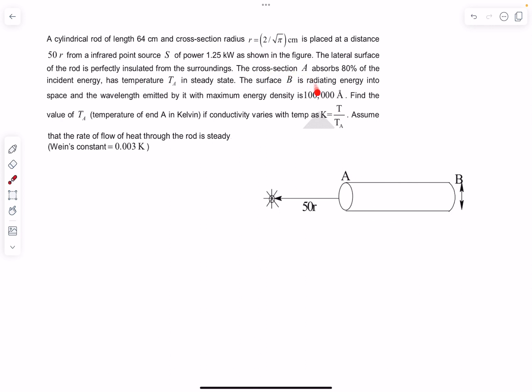Of the incoming radiation, only 80% of it is absorbed by the surface A, and it's given that the temperature of surface A is TA in steady state. The surface B is radiating energy into space, and the wavelength emitted by it with maximum energy density is 100,000 angstrom. So we have to find the value of TA. And it's also given that the conductivity of the rod varies with temperature as T divided by TA.